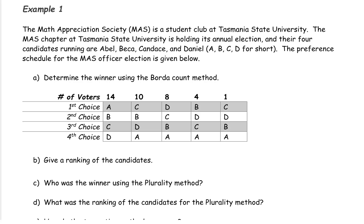Determine the winner using the Borda count method. With the Borda count method, each place on the ballot will have a point value associated with it. You start at the last choice and assign that a point value of one, and work your way up the ballot. So the third place choice is going to have two points, second choice will be three points, and first choice would be four.